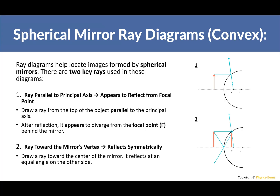Now for convex mirrors, ray diagrams use two key rays. The first ray parallels the principal axis and after reflection appears to diverge from the focal point behind the mirror. So from the top of the object, go straight across, and the reflected ray diverges outward but appears to come from the focal point inside the mirror.